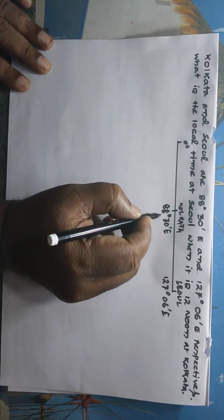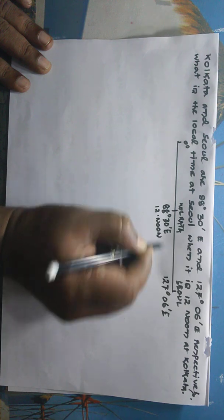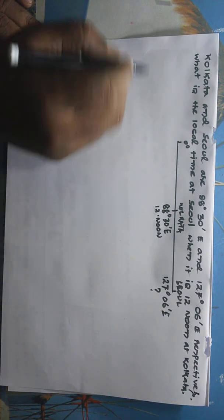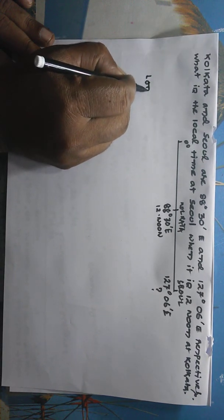Time of Kolkata is given, that is 12 noon, and we have to find out the time here. Like in case of the previous cases, first we have to find longitudinal difference.